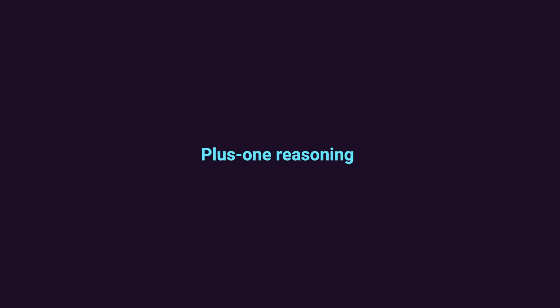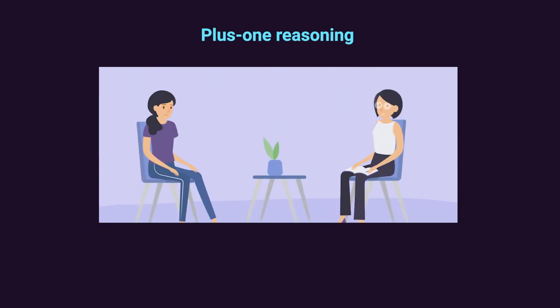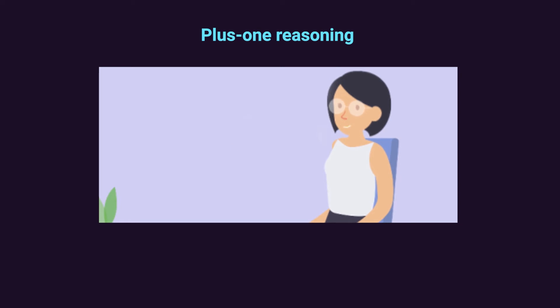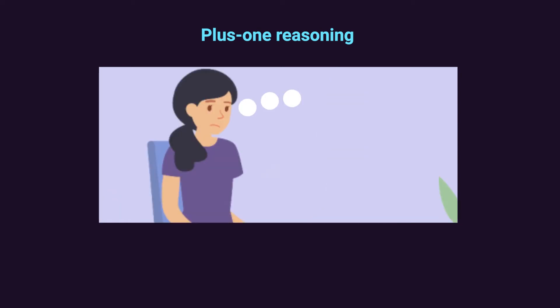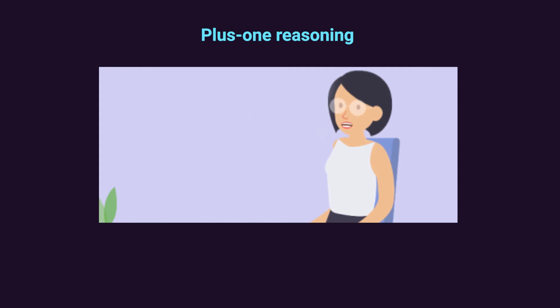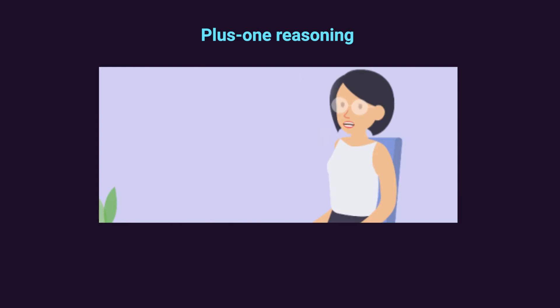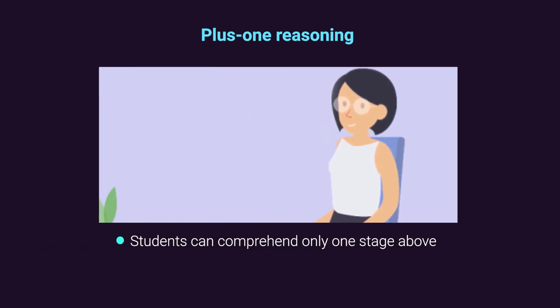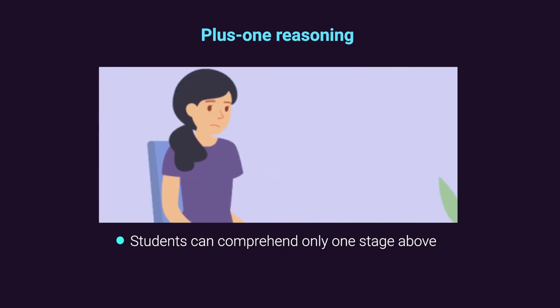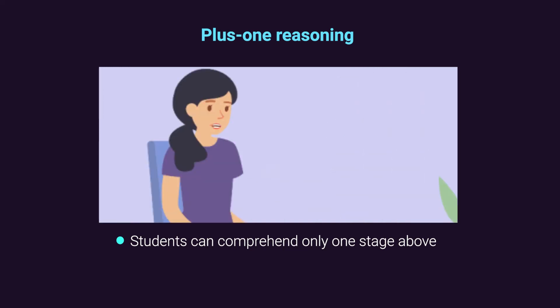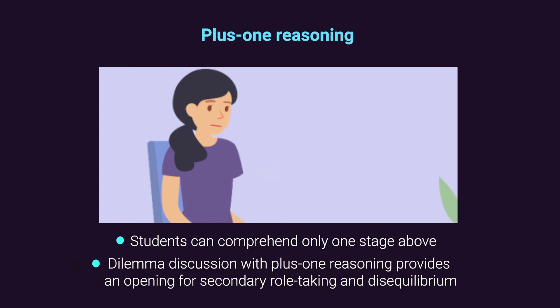The second strategy is plus one reasoning, which is a significant factor in dilemma discussion. Within developmental domains, individuals have a typical stage indicating their common method of processing experience. While students can understand all levels of reasoning below their own, they usually comprehend only one stage above. The slightly increased complexity of reasoning one stage above is generally stimulating to students. More than one level can be overwhelming. Encouraging students to listen to reasoning one level up promotes development.